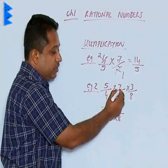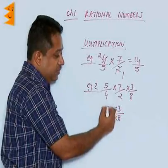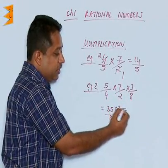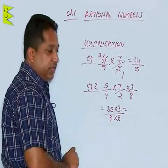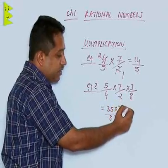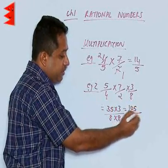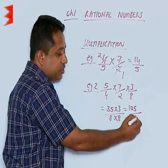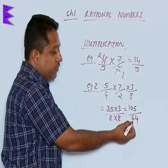We are multiplying the first two and then the result has to be multiplied by the third number. Now, 35 is multiplied by 3. When we multiply 35 by 3, we are going to get 105 and 8 into 8 is 64. So we get 105 by 64.